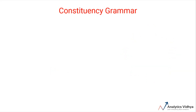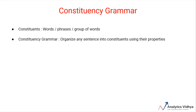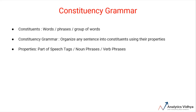Now let's discuss grammars. The first type of grammar is constituency grammar. Any word, group of words, or phrases can be termed as constituents, and the goal of constituency grammar is to organize any sentence into its constituents using their properties. These properties are generally driven by their part of speech tags, noun or verb phrase identification.